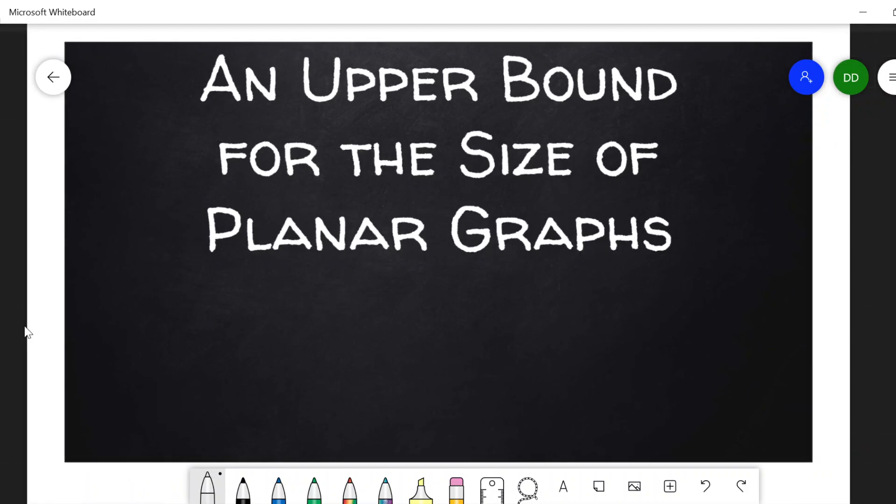So for example, what about the graph K5? Here I can draw K5 as we normally do with the outside 5 cycle and the interior 5 cycle.